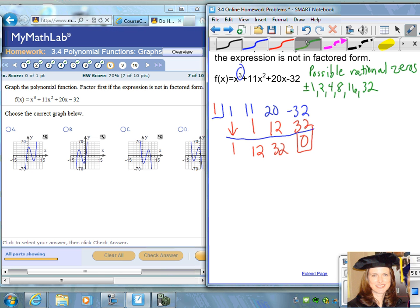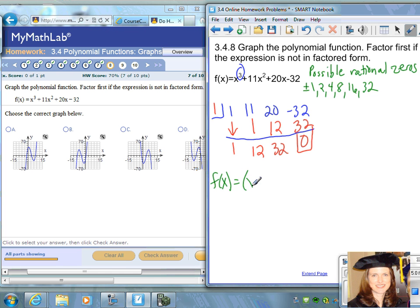So this problem can be written as the polynomial function: since 1 is a 0, x - 1 is a factor. The other factor is what's listed down here. Since this was x³, this is going to be x². This is x, so we can write it as x² + 12x + 32.